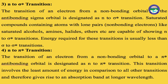For n to pi star transition, compounds must have a pi bond present along with a heteroatom (for the non-bonding condition). So molecules that contain a pi bond and also have a heteroatom present will show this type of electronic transition. These four types of transitions — sigma to sigma star, pi to pi star, n to sigma star, and n to pi star — are called electronic transitions, and the entire UV spectroscopy is based on these electronic transitions.